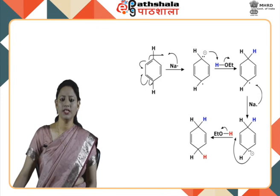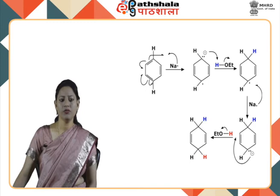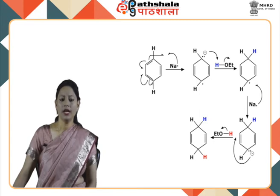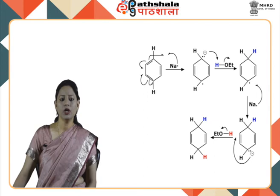As shown, benzene is reduced to 1,4-cyclohexadiene in the presence of sodium and ethanol in ammonia. From the mechanism it is clear that a sodium radical is involved in the reduction, which also forms some other carbon radicals as intermediates. The sodium radical formed after loss of an electron from metallic sodium reacts with benzene to form a radical anion. The anion — the carbon carrying a negative charge — extracts a proton from the solvent ethanol molecule. The radical then accepts an electron from another sodium radical to form a negatively charged carbon center at the other part of the benzene nucleus, which further extracts a proton from ethanol and the hexadiene molecule is generated.